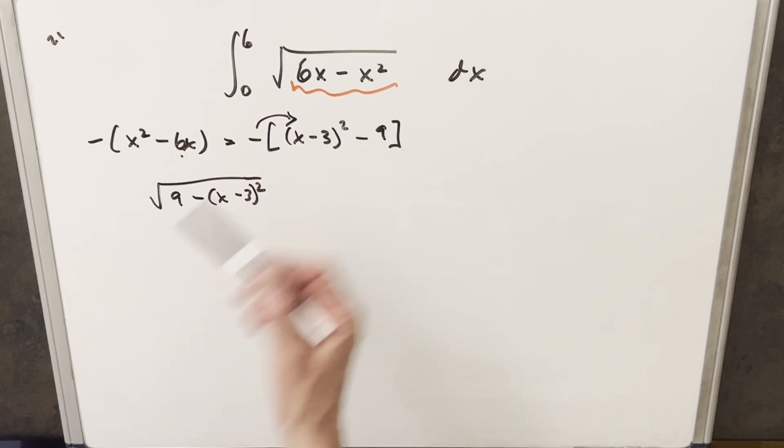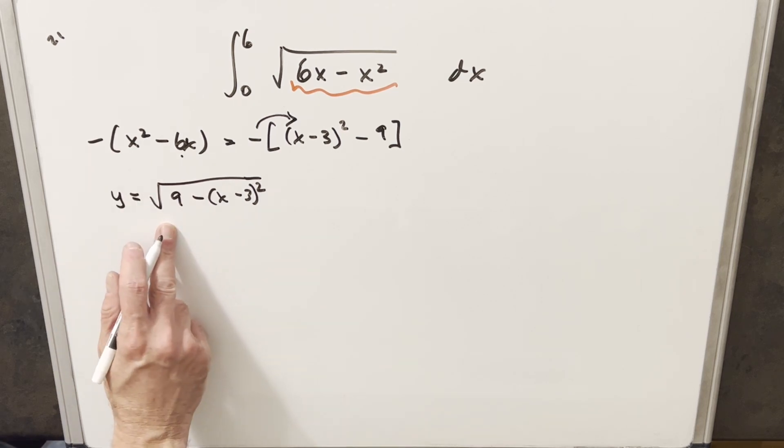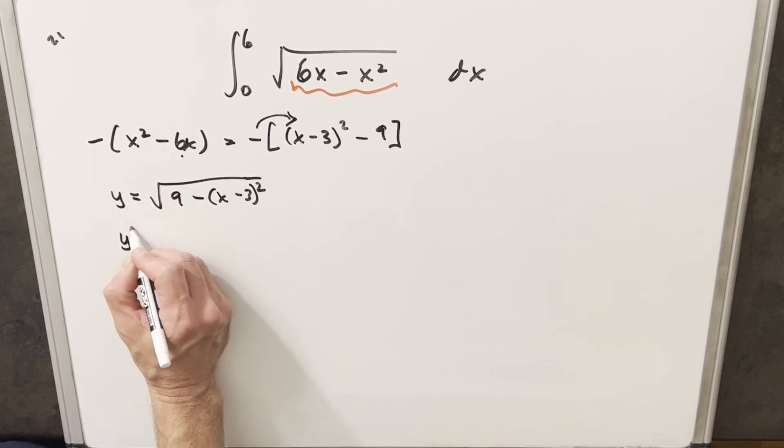So what I did last time is I put this back into the integral and then did trig substitution. But this time, we're going to do something a little different. We're going to set this expression to y and keep working with this. And then I'm going to square both sides.